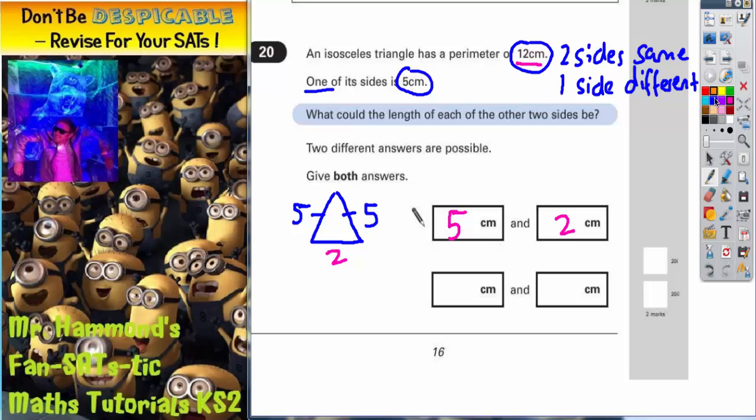What about the second set of answers? Well, if we draw another isosceles triangle again, and this time say that these two sides are the same. So this time, we've already said that 5 could be on the side that is the same as another side, because two sides are the same. So what happens if the 5 is on the side that's different? So this time, I'll say 5 is the different side at the bottom there. What would these two sides have to be?